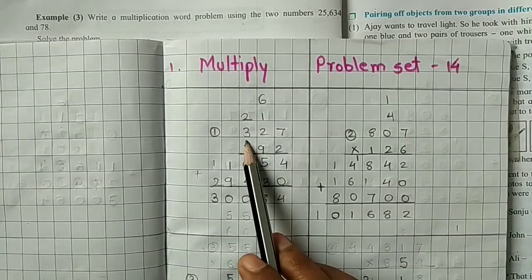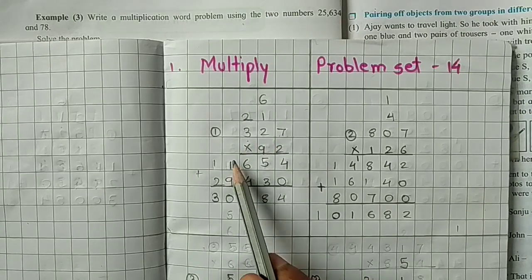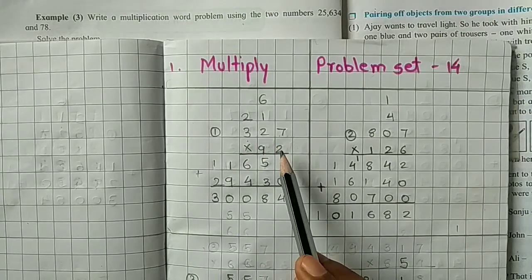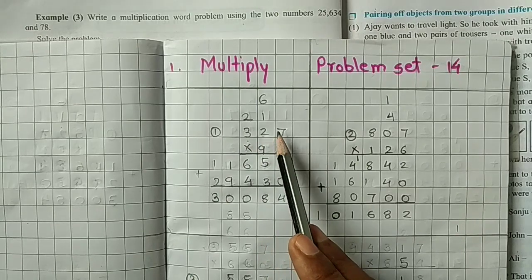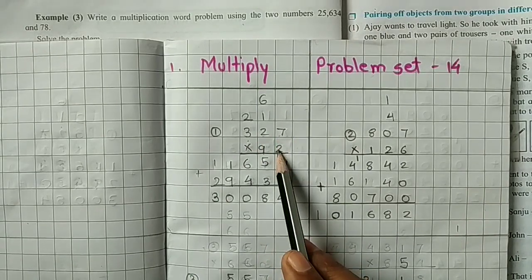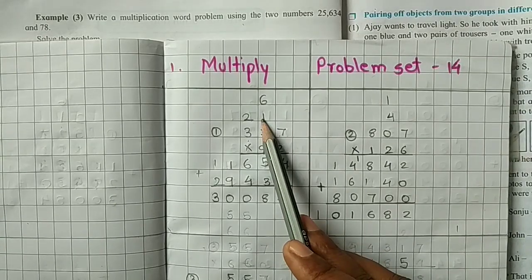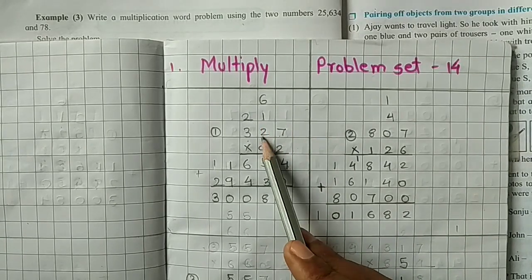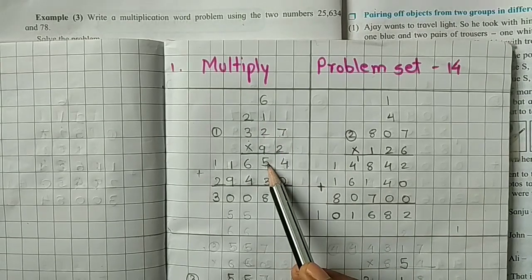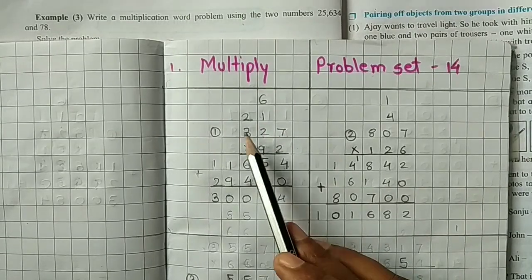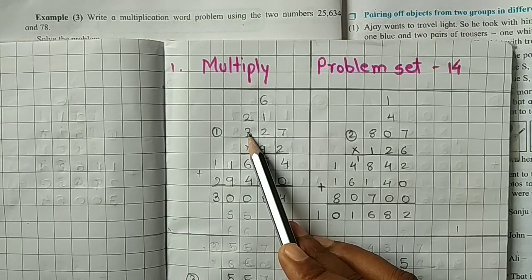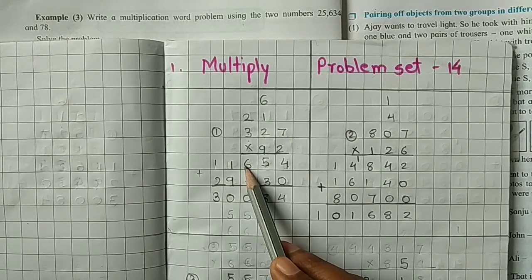First sum is there, 327 multiply by 92. So we multiply 327 by 2 first. 2 times 7 is 14, so 4 write in unit place, 1 carry forward in 10 place. 2 times 2 is 4 plus 1, 5 is there. 2 times 3 is 6, so write here 6.